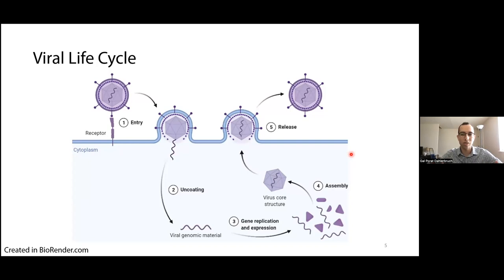Viruses are simply genetic material encapsulated and protected by proteins. One property common to all viruses is that they cannot self-replicate, but instead depend on the host cell mechanisms and resources. Most viruses go through a similar life cycle: the virion detects the host cell through a receptor and then either enters with the whole capsid or just the genomic material, releasing it into the cell. The viral genomic material is then replicated and expressed to create viral proteins and more viral genome, which self-assemble into new virions that release from the host cell to infect others.